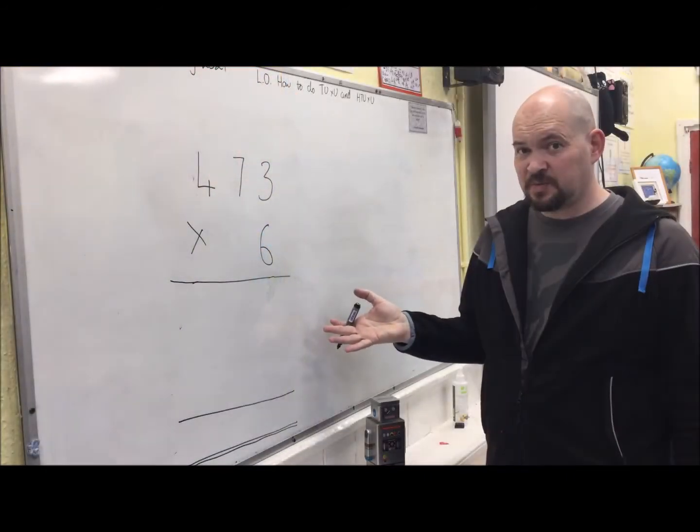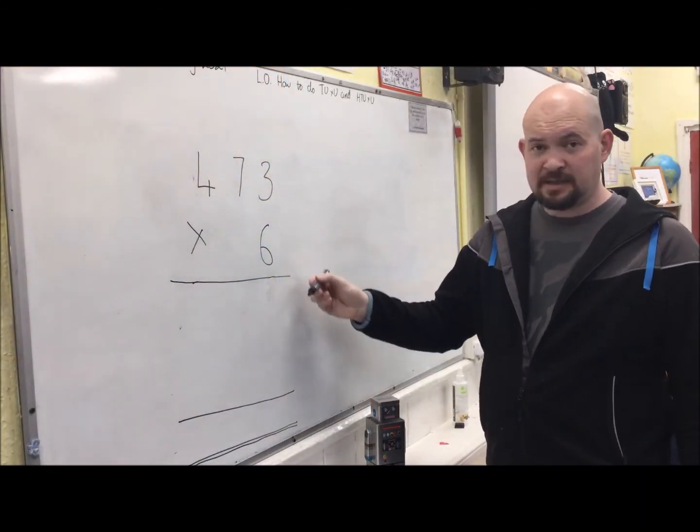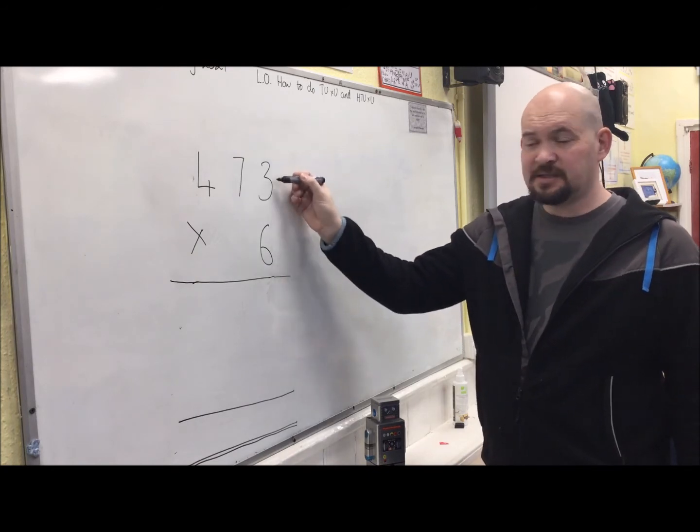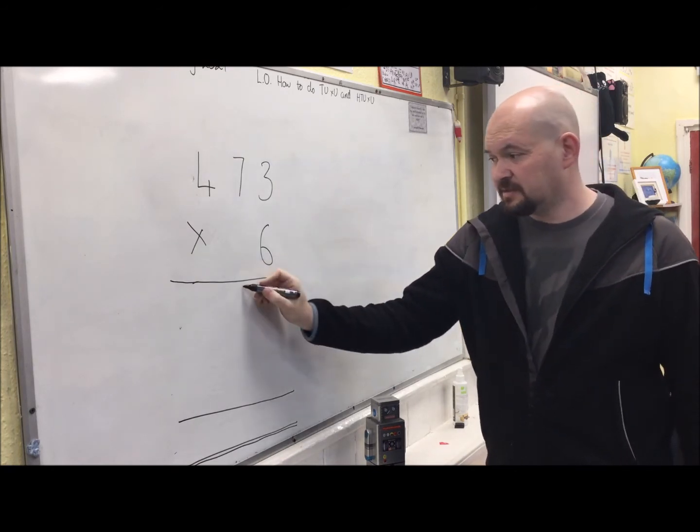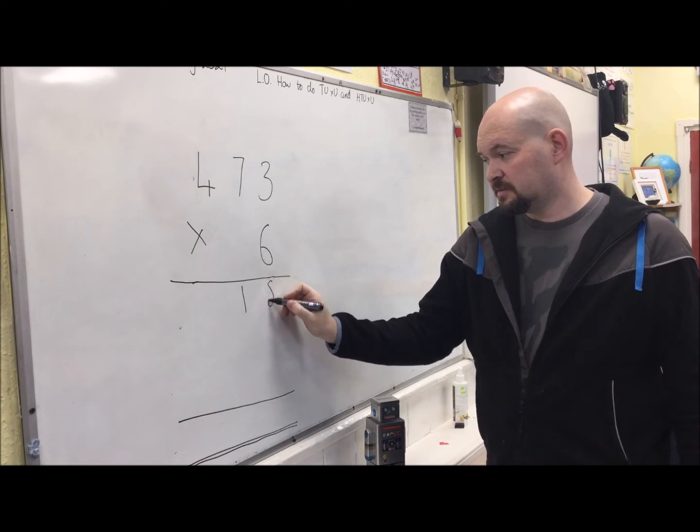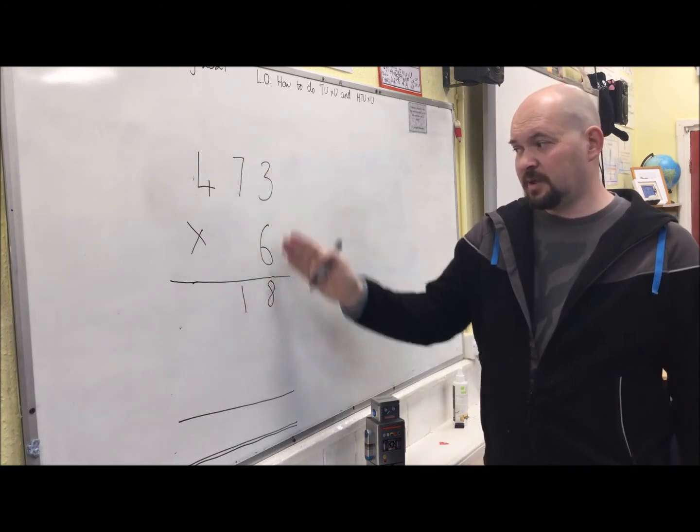This last example is the biggest one yet. Exactly the same process. I know that 6 times 3 is 18. Lining up the tens and the ones.